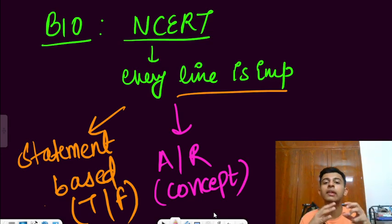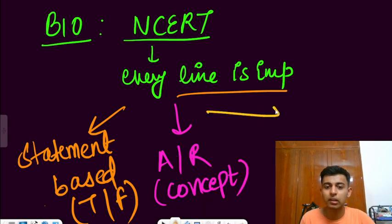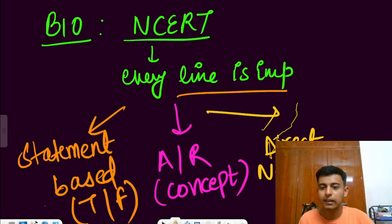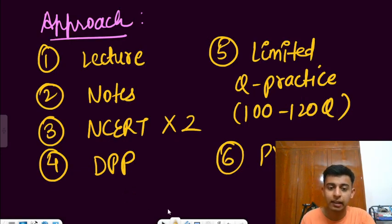And they can be confusing at times. Secondly, assertion and reason, which is based on concept. You're able to relate two things. If you're able to relate two things, then assertion reasoning will be very simple for you. Third thing to remember here is direct NCERT lines. That is your one word type of questions that any one word will be given to you and you have to answer accordingly.